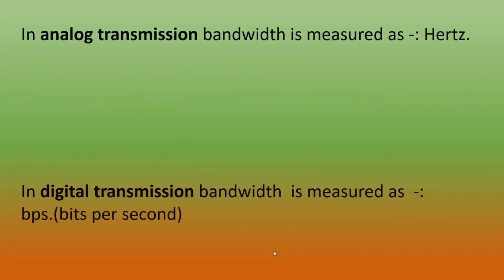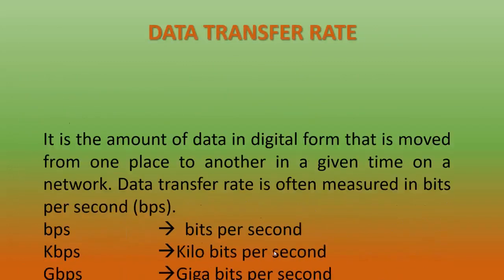Now we can see the next topic: transmission media. Transmission media is the same as communication channel. Communication channel means it is a physical path that is used to transmit data from one device to another. Data is transmitted through wires connecting one computer to another — that wire is known as the physical path. So, transmission media means it is a media or physical path used to transmit data from one place to another.